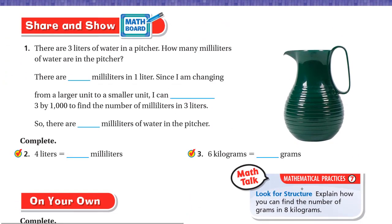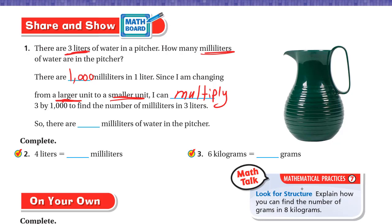Now, Share and Show. Number one: there are 3 liters of water in a pitcher. How many milliliters are in the pitcher? We have 1,000 milliliters in one liter. Since we're changing from a larger unit (liters) to a smaller unit (milliliters), we multiply 3 by 1,000. Write the 3 and add three zeros — that's 3,000 milliliters of water in the pitcher.